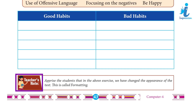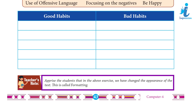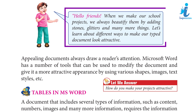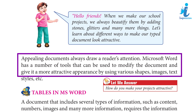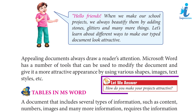Teacher's note: Apprise the students that in the above exercise we have changed the appearance of the text. This is called formatting. Hello friends! When we make our school projects, we always beautify them by adding stones, glitters, and many more things. Let's learn about different ways to make a typed document look attractive. Appealing documents always draw a reader's attention. Microsoft Word has a number of tools that can be used to modify documents and give them a more attractive appearance using various shapes, images, text styles, etc.